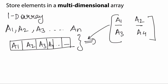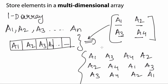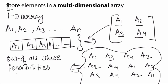Now to store these elements, I have several possibilities. I could store a1, a3, a4, a2 — just filling up randomly — or a2, a4, a1, a3. Similarly I could have started with a3, a4, a2, a1. Depending on the number of elements I have in my two dimensional array, I could have numerous possibilities. Out of all these possibilities, there are two main ways to store elements in a multidimensional array.